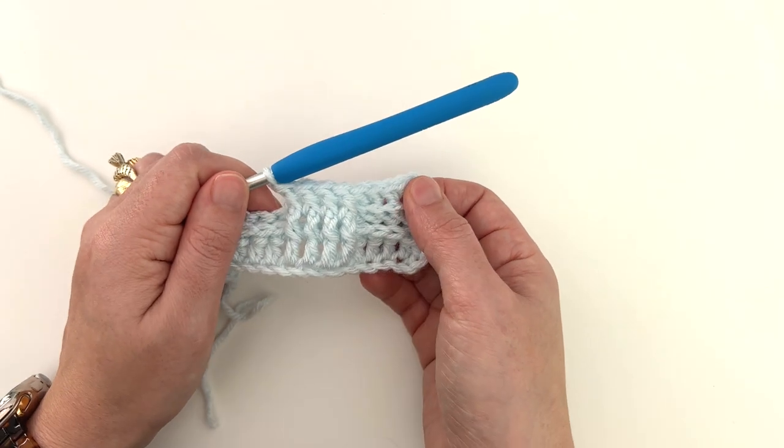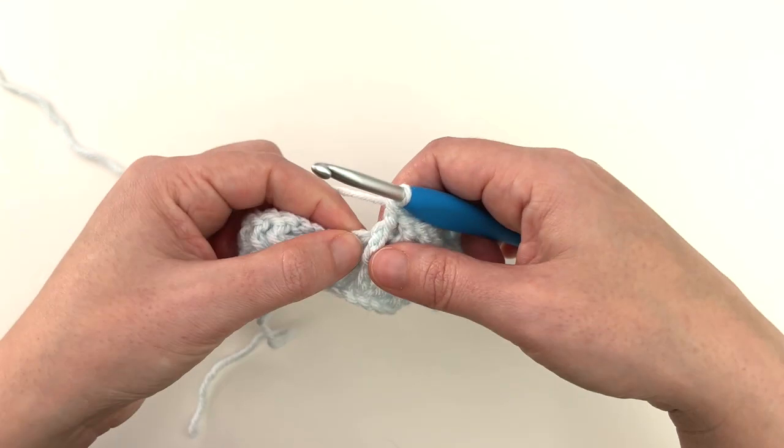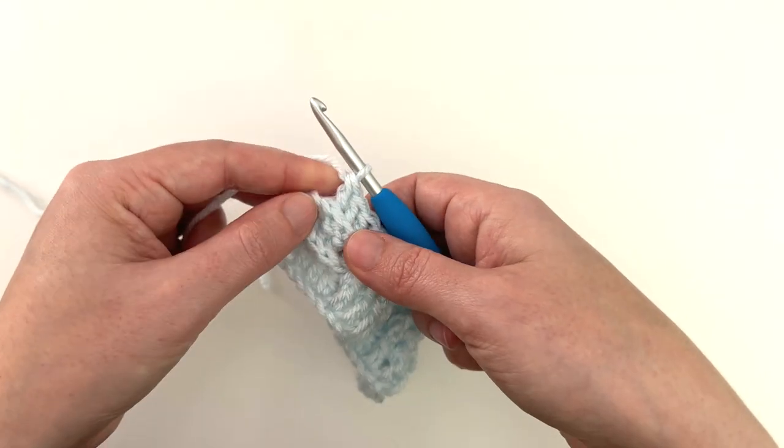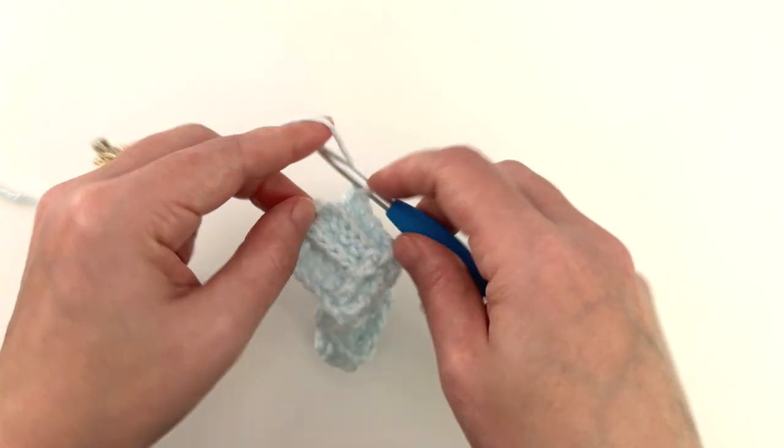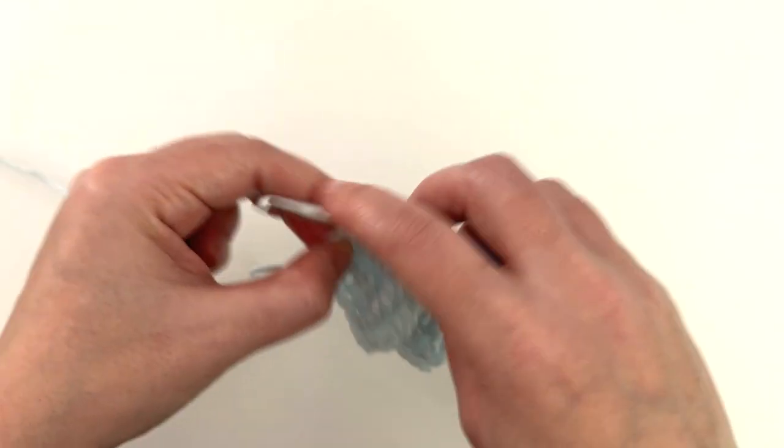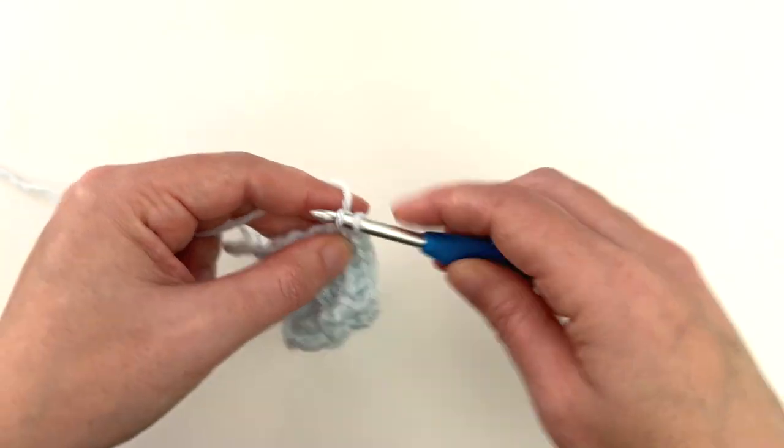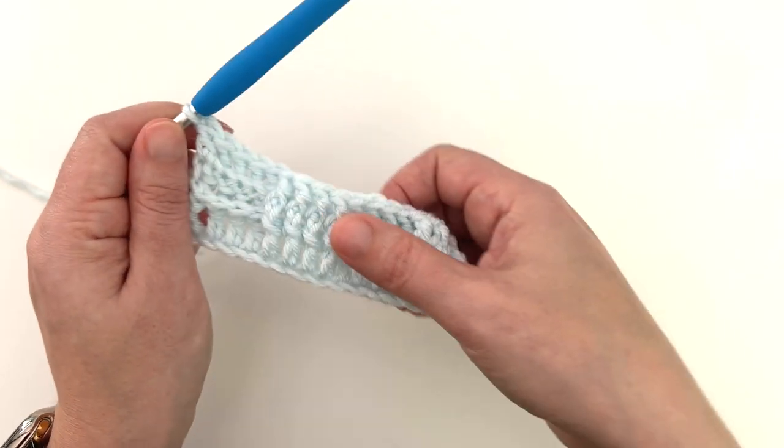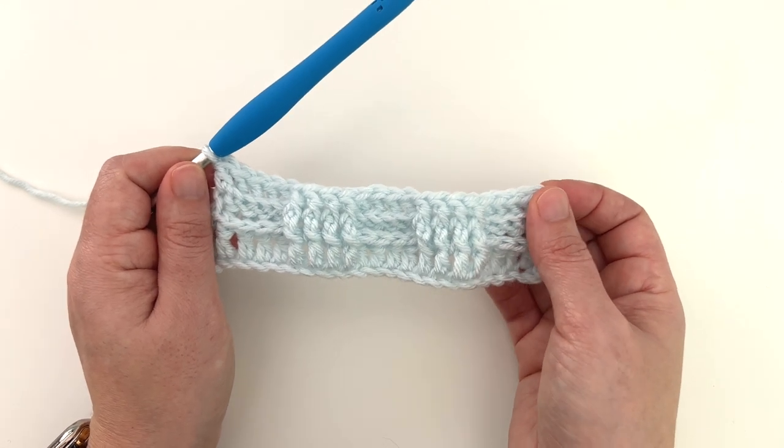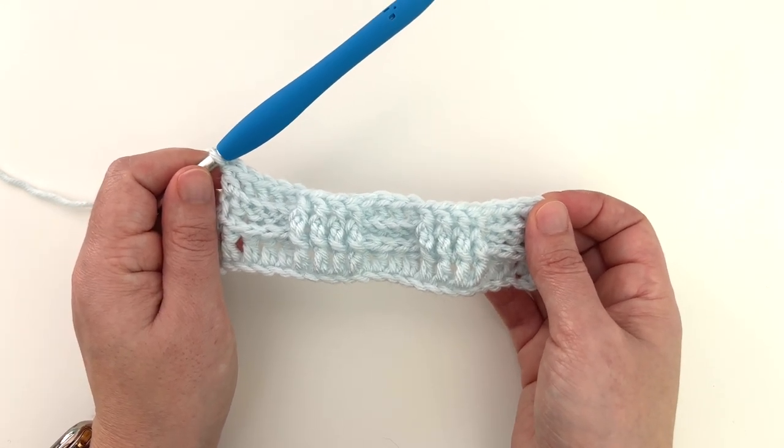So we're going to repeat that across. Four back, four front, four back. Okay, that's our last back post. And then again, we're going to double crochet into the top of our turning chain. That is row three, but it's the second row of your four row repeat.